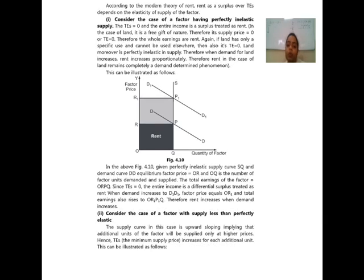In figure 4.10, given a perfectly inelastic supply curve SQ and demand curve DD, the equilibrium factor price is OR and OQ is the number of factor units demanded and supplied. Total earnings of the factor equal ORPQ. Since TE is zero, the entire income is a differential surplus treated as rent. When demand increases to D1D1, the factor price equals OR1 and total earnings rise to OR1P1Q. Therefore, rent increases when demand increases.